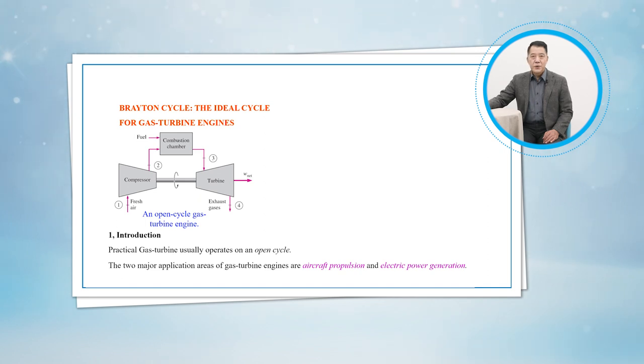The two major application areas of gas turbine engines are aircraft propulsion and electric power generation. When it is used for aircraft propulsion, the gas turbine produces just enough power to drive the compressor and a small generator to power the auxiliary equipment. The high-speed exhaust gases are responsible for producing the necessary thrust to propel the aircraft.